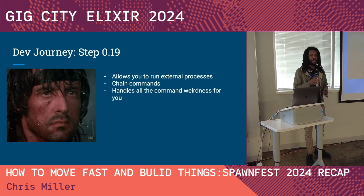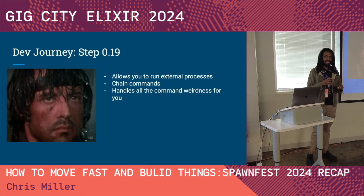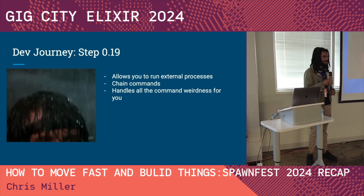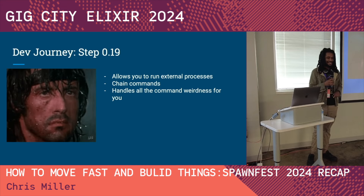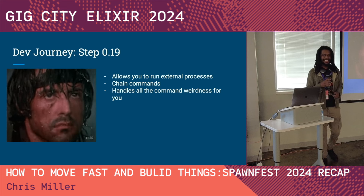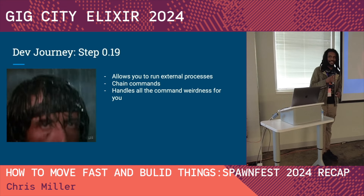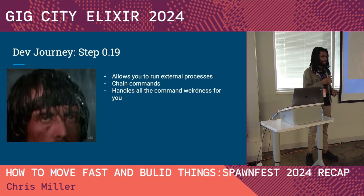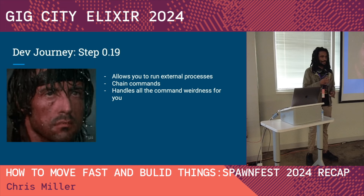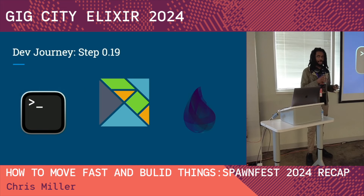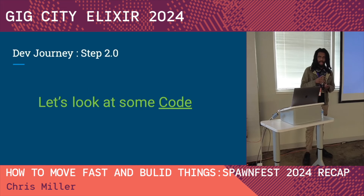Rambo allows you to run external processes, chain commands, and it handles all the weirdness of processes in Elixir. I had no idea at the time how deep it goes and how you can run a process from Elixir. We figured out the Elm compilation part and now let me show you some code.